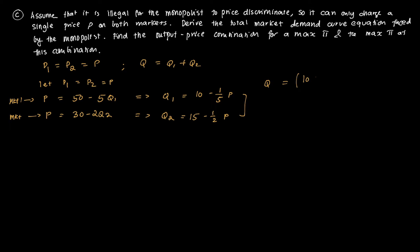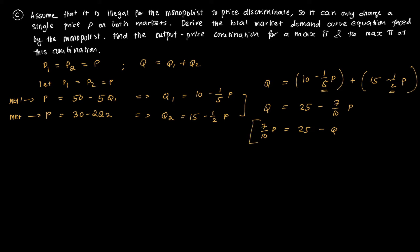Total market demand is Q equals 10 minus one-fifth P plus 15 minus one-half P, which gives Q equals 25 minus 7 over 10 times P. Rewriting as an inverse demand function by transposing and multiplying both sides by 10 over 7, we get P equal to 250 over 7 minus 10 over 7 times Q. This is the demand function we'll use.